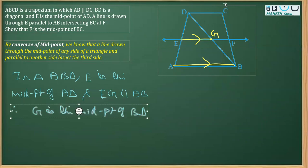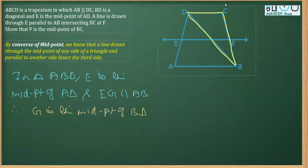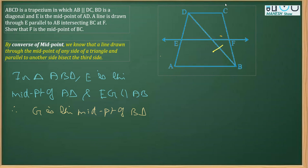Now our focus changes to the other triangle, triangle BCD. We have already proved that G is the midpoint of BD. Also, GF is parallel to DC, because we are given that DC is parallel to AB, and EF is parallel to AB — so two lines parallel to the same line are parallel to each other. Therefore EF, and specifically GF, is parallel to DC.